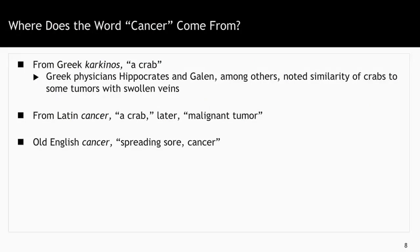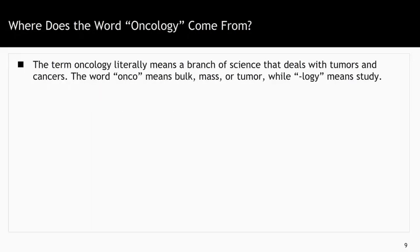Where does the word cancer come from? The origin of the word cancer is from the Greek 'karkinos,' or crab. It was termed this because the Greek physicians Hippocrates and Galen, among others, noted how cancer looked like a crab, as tumors had swollen veins along the skin. It then evolved into the Latin term 'cancer,' which also means crab or later malignant tumor. In old English, cancer meant spreading sore. The study of cancer is oncology. The word 'onco' means bulk, mass, or tumor, while 'logi' means study — so it's the study of a bulk or tumor.